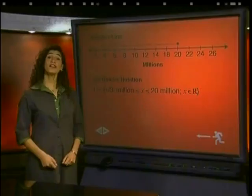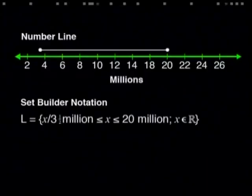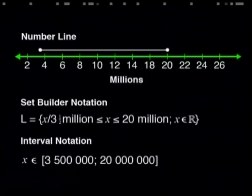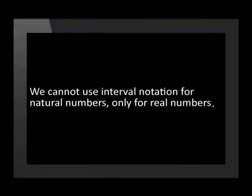For real numbers, there is a third way of representing this set. It is called interval notation. Now, the square brackets represent all possible real numbers starting and including 3.5 million and going up until 20 million including 20 million. But always remember we cannot use interval notation for natural numbers, only for real numbers.